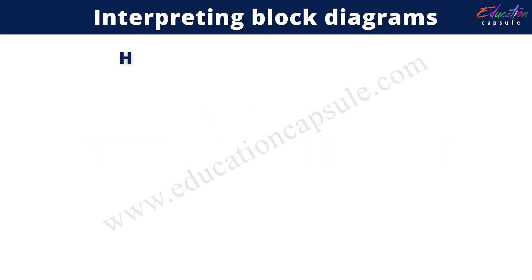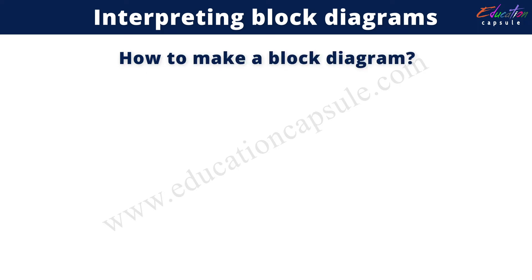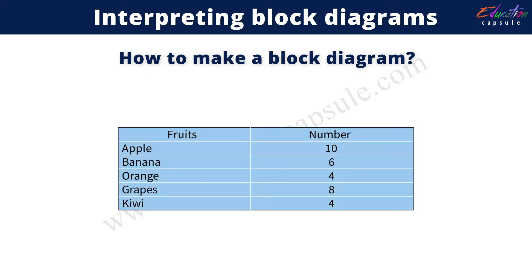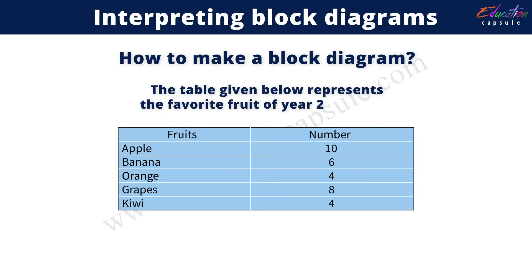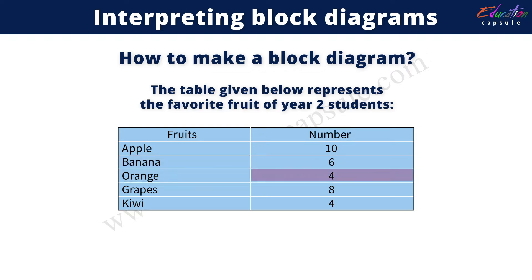Now, how to make a block diagram? Let's learn with the help of an example. The table below represents the favorite fruit of year 2 students. Apple is liked by 10 students, banana by 6 students, orange by 4, grapes by 8, and kiwi by 4.